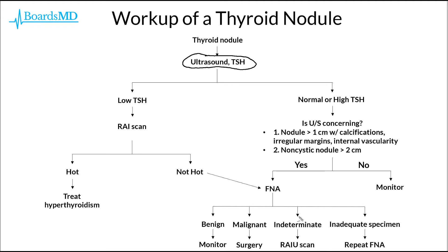If the FNA is indeterminate, then we can perform a radionuclide scan if we have not performed this already. And in the case of having an inadequate specimen, then we should first repeat the FNA before determining whether or not this patient is going to need surgery.